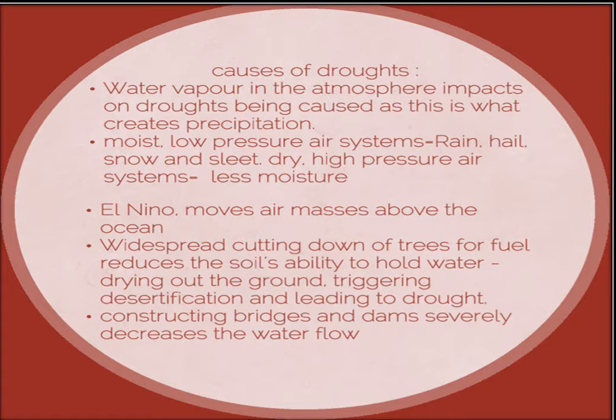Widespread cutting down of trees for fuel reduces the soil's ability to hold water, drying out the ground, triggering desertification, and leading to drought. Constructing bridges and dams severely decreases the water flow.